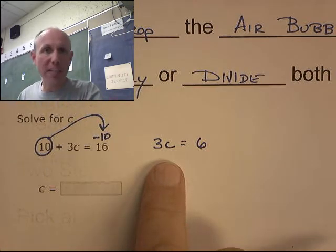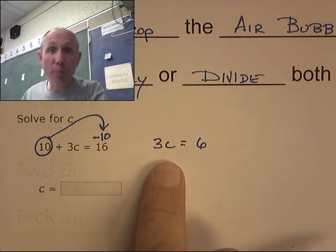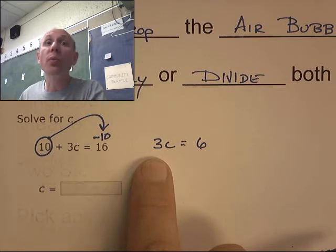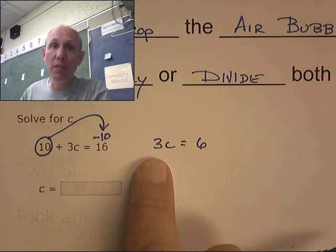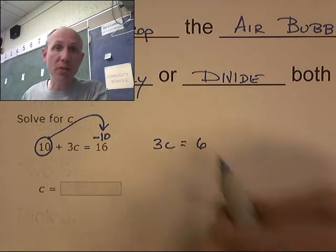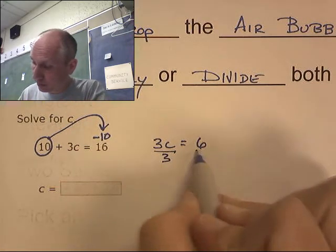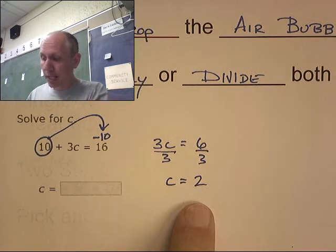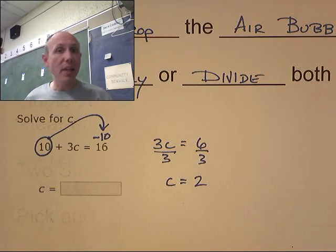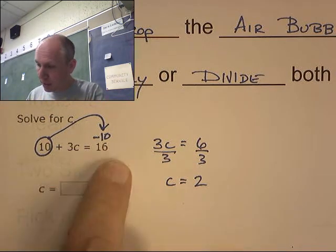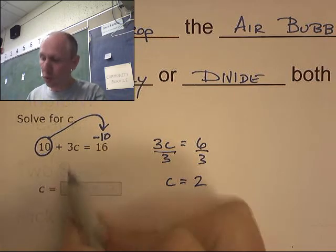Who is the variable? C is the variable. Who's bugging it? Three is bugging it. What is three doing? Three is multiplying. How do I fight multiplication? Division. I would like to divide both sides by three. C equals 2. Does this work? Let's see: three times two is six, plus ten is sixteen. It does work.